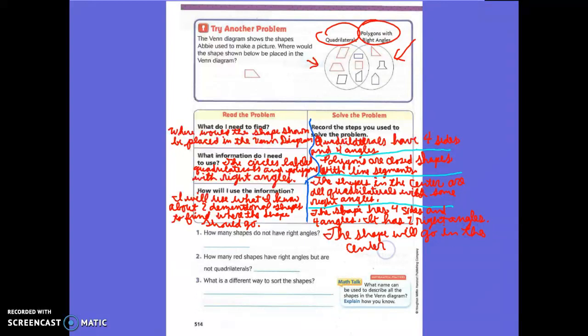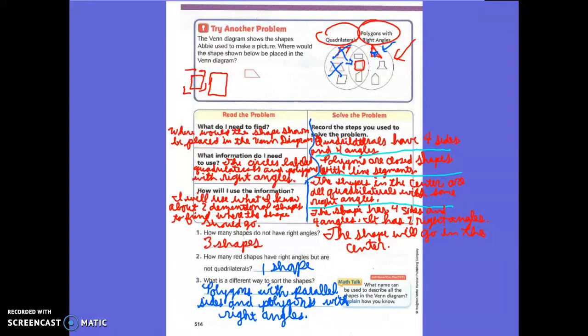The shape will go in the center. On number one, how many shapes do not have right angles? Three shapes. How many shapes have right angles but are not quadrilaterals? One shape. What's a different way to sort them? Polygons with parallel sides and polygons with right angles.